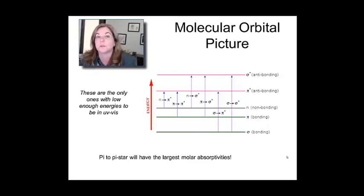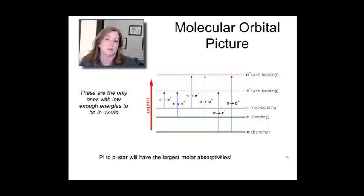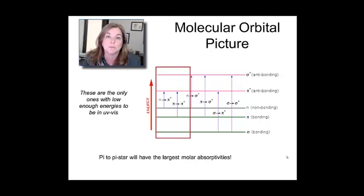A lot of these other transitions, sigma to sigma star, for example, might occur, but their frequencies would be far larger, so they would be more to the ultraviolet beyond the reach of a conventional UV-Vis spectrometer. Keep in mind that's really your focus: n to pi star and pi to pi star transitions for most smaller organic molecules that don't contain metals.